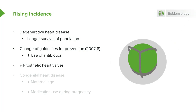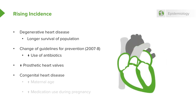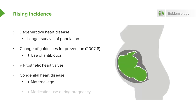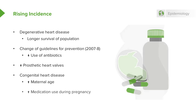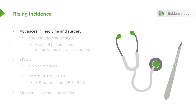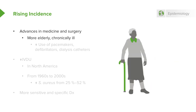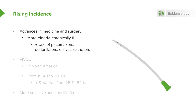We're putting prosthetic heart valves in people much more commonly. Congenital heart disease is slightly on the increase because women are waiting longer to become pregnant, and with that comes an increased incidence of congenital heart disease. Furthermore, lots of medications are now used during pregnancy and the effect of those may have something to do with congenital heart disease. Advances in medicine and surgery have sparked some of the increase in infective endocarditis — pacemakers, defibrillators, dialysis catheters — you name it.